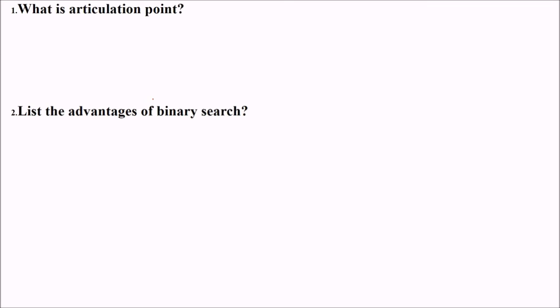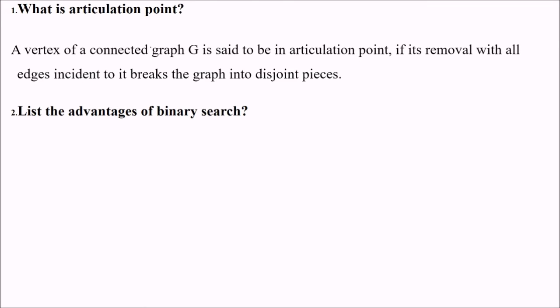What is articulation point? In a graph, a vertex of a connected graph G is said to be an articulation point. You have in graph various vertex and edges. So vertex is known as an articulation point if its removal with all edges incident to it breaks the graph into disjoint pieces. If you remove that vertex, the graph will be a disjoint graph. That is articulation point.